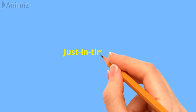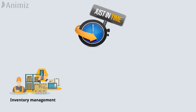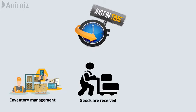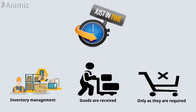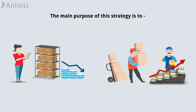In this video, you are going to learn Just-in-Time or JIT. Just-in-Time is an inventory management approach in which goods are received from suppliers only as they are required. The main purpose of this strategy is to decrease inventory holding costs and increase inventory turnover.